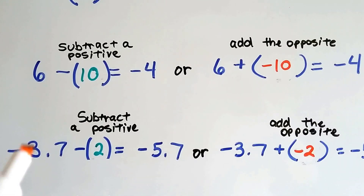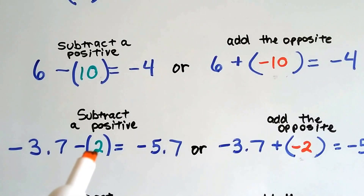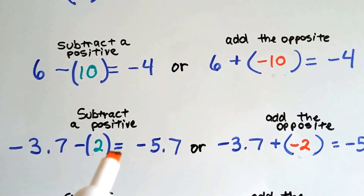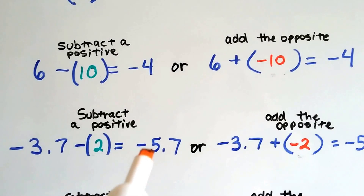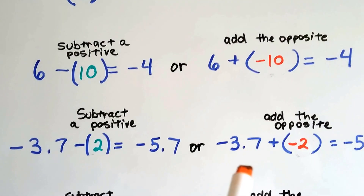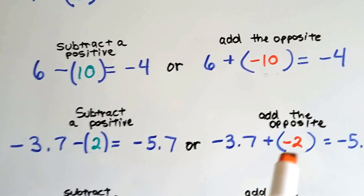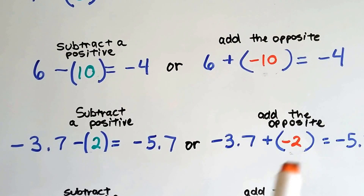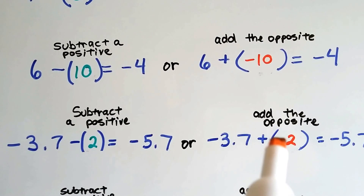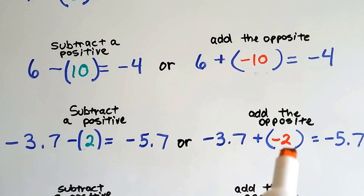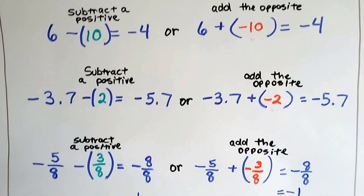When we have negative 3.7 and we're taking away a positive 2, we're going more negative — it's going to equal negative 5.7. We can also add the opposite and do negative 3.7 plus a negative 2. Instead of taking away a positive 2, we add a negative 2. That's adding the opposite, and it gets us to negative 5.7.